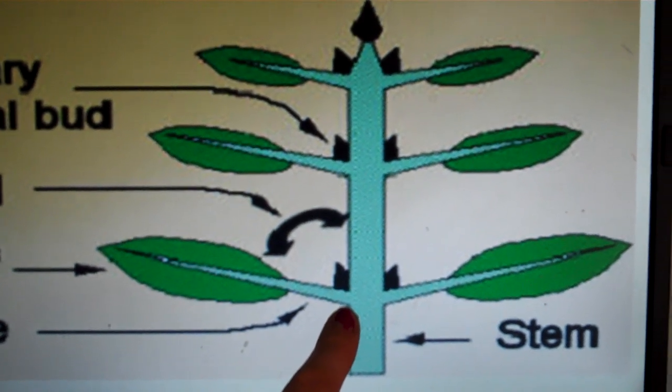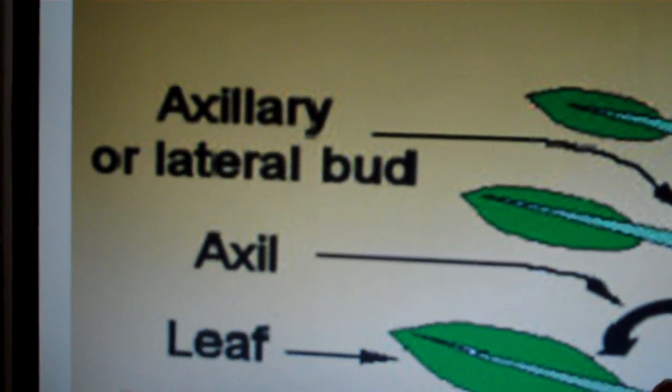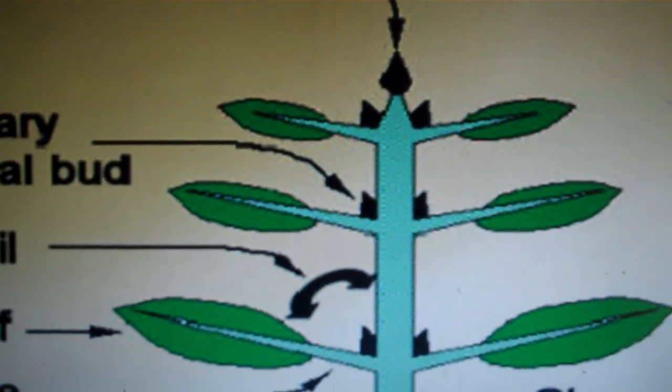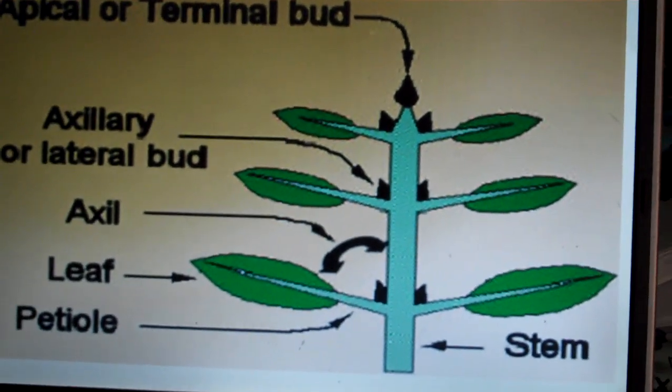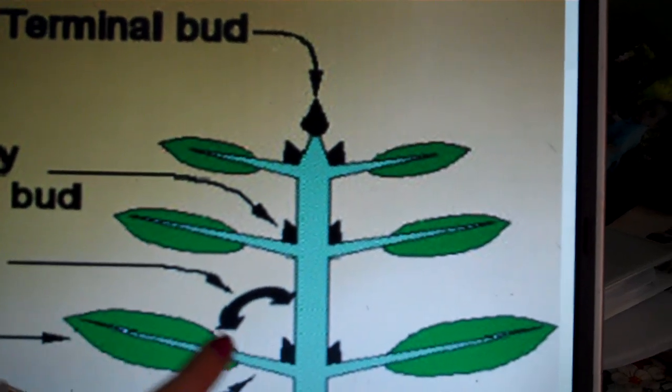So located in the node there is an axillary bud or a lateral bud. You can see that here. These are in black. This is where secondary growth would occur in the plant. So the lateral bud is where new branches or leaves will start to grow.